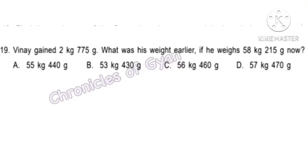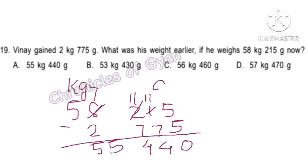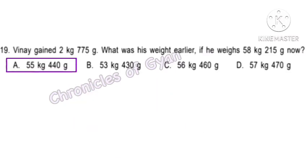Question 19. A winner gained 2 kg 775 grams. What was his weight earlier if he weighs 75 kg 250 grams now? His earlier weight equals present weight minus weight gained. Winner's earlier weight was option A — 55 kg 440 grams.